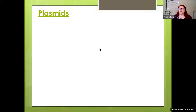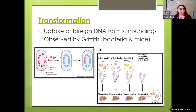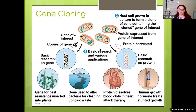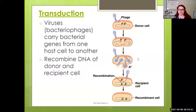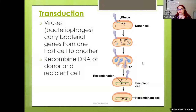Transduction is when a virus injects a piece of DNA. So transformation is taking DNA from the environment; transduction is when it's given by a virus — specifically a bacteriophage, a virus that attaches to a bacterium and injects DNA. That DNA becomes part of the genome, essentially takes over the cell, and can cause a recombination of DNA.